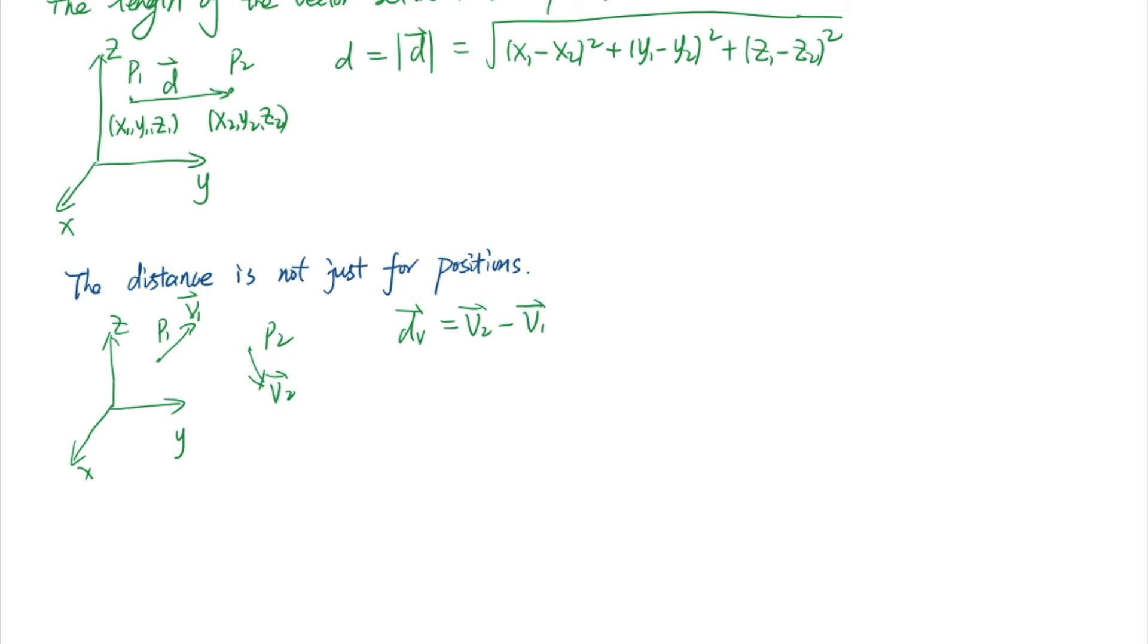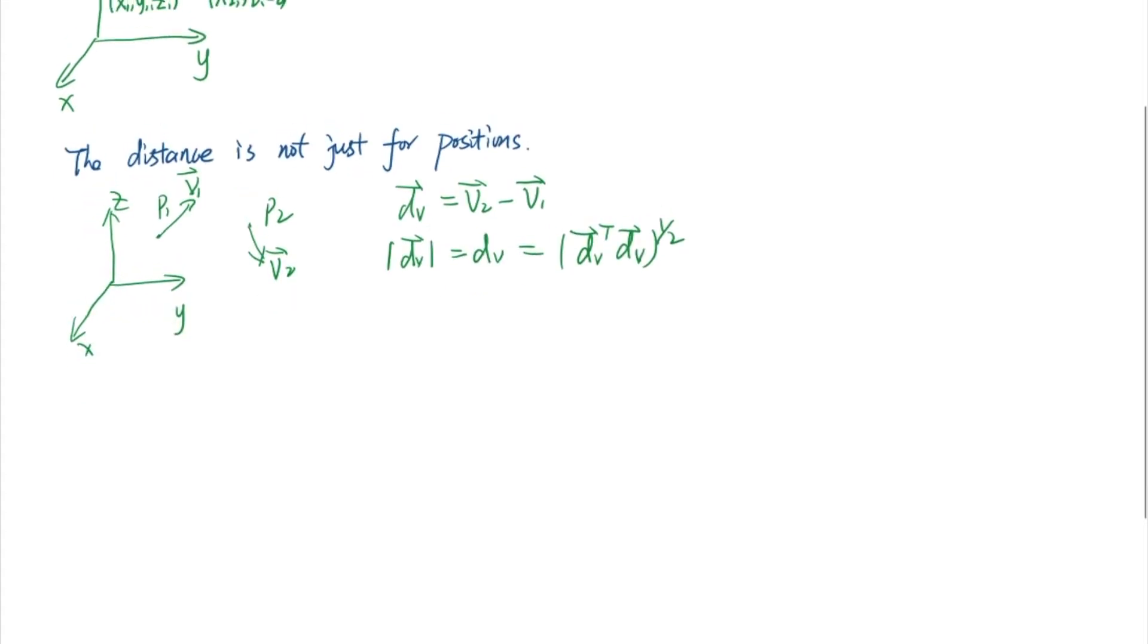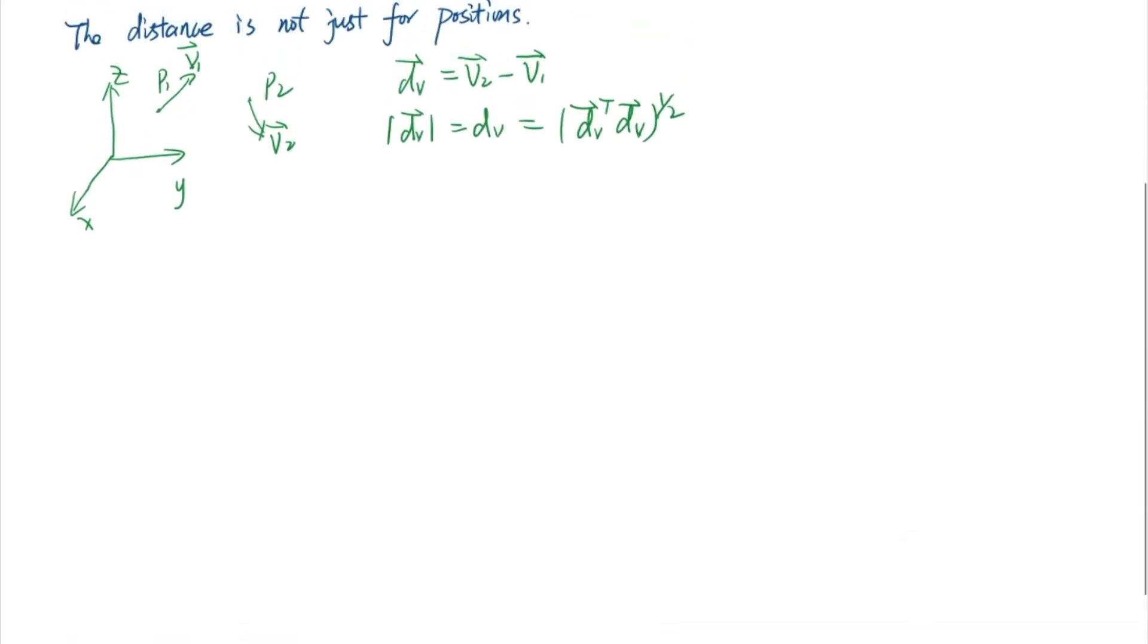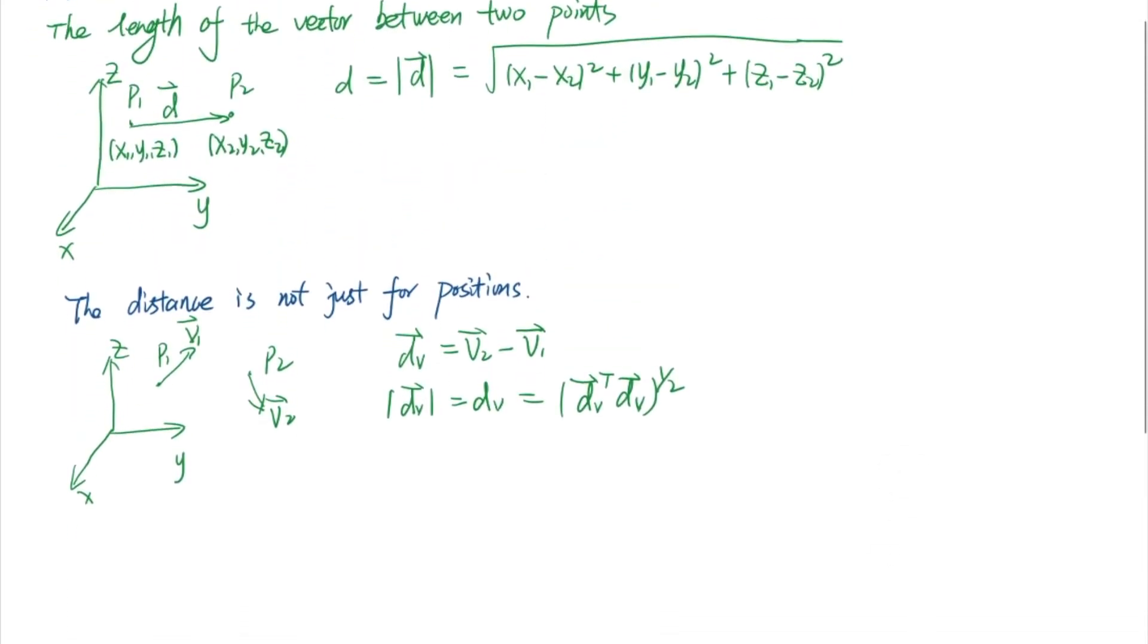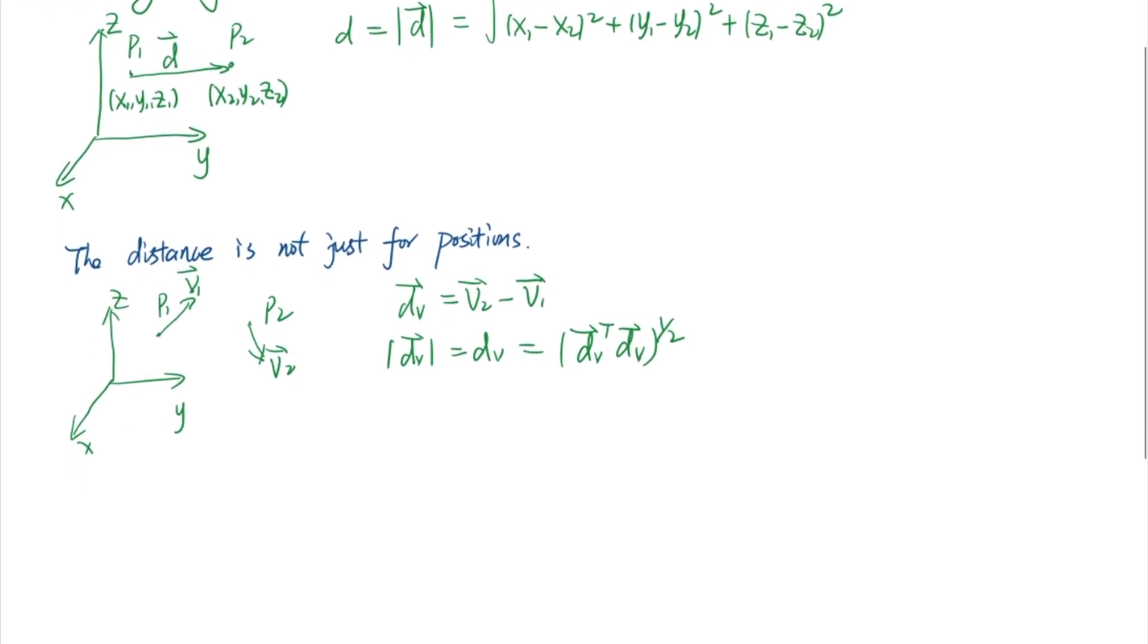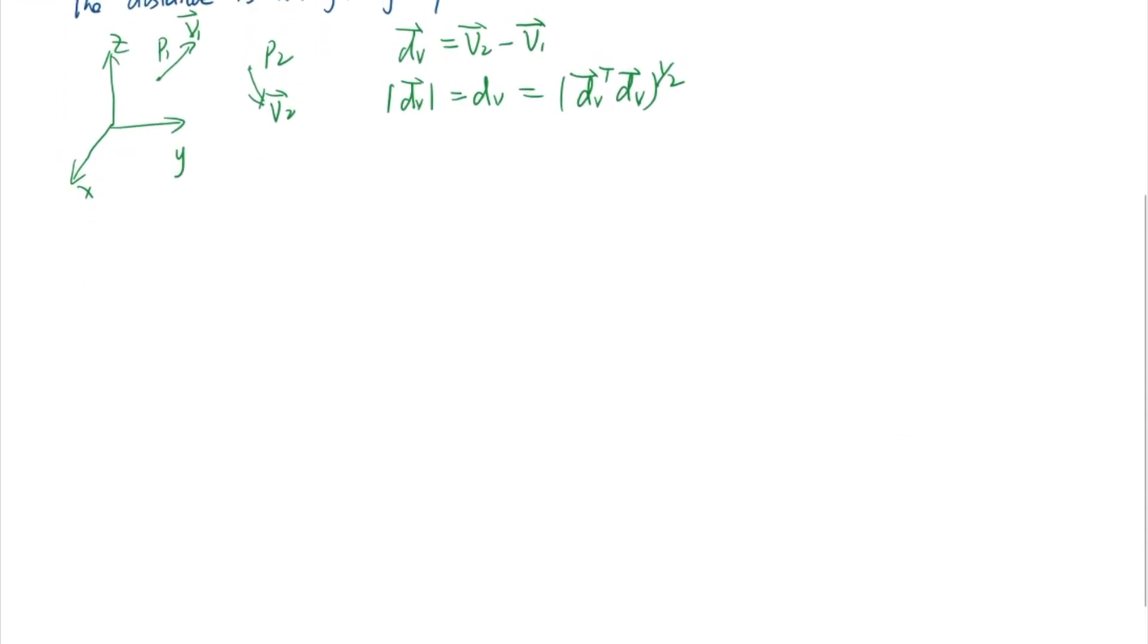Therefore, their velocity difference or velocity distance is just the inner product of this dv vector. So those are very basic types of distance, and they are very easy to understand. Something more complicated is the distance for estimation systems.